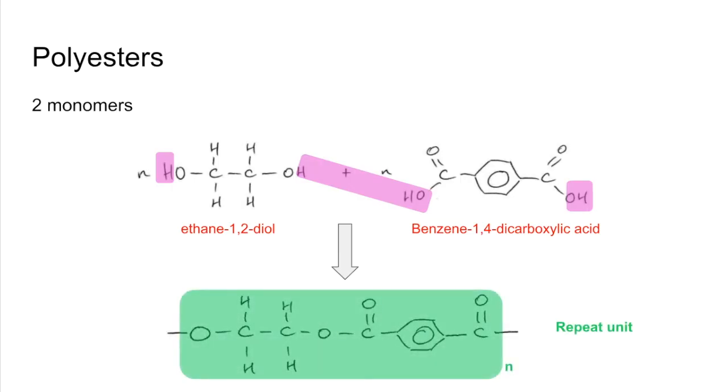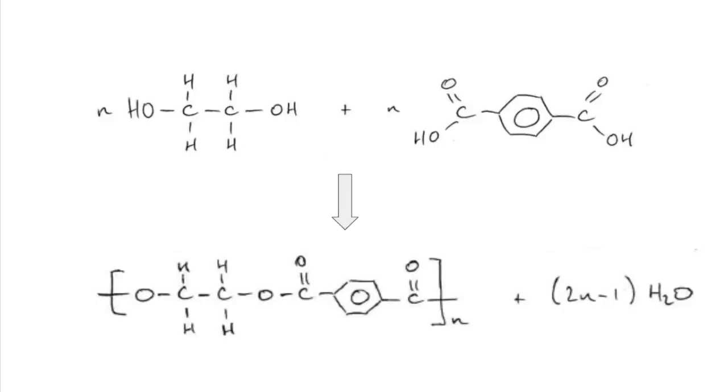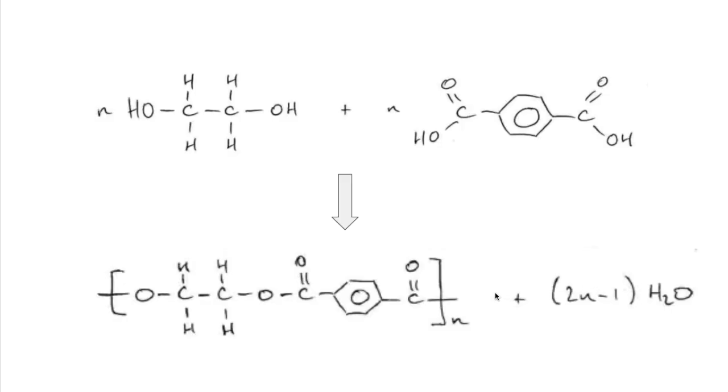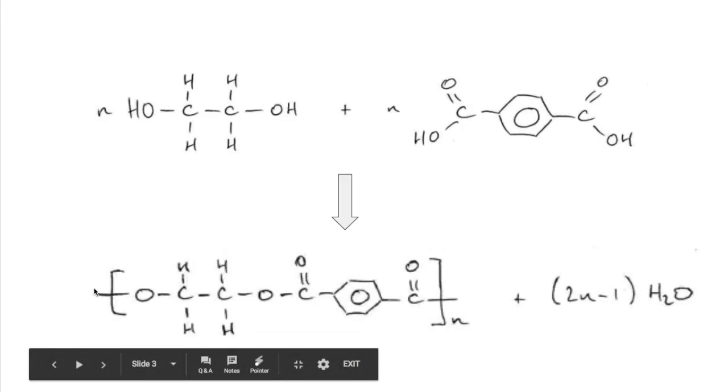That's going to be the repeat unit, normally drawn in a bracket. The ester linkage is there underlined in red. The equation for that reaction would look like that. The 2n-1 is coming from the fact that at the very extremities of the chain you're not going to lose that H and that OH.